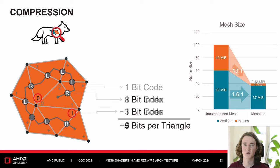Looking at the index buffer, we notice many indices follow an ascending pattern, which we can exploit for even better compression. We replace those indices with a marker indicating whether they follow the ascending pattern and only explicitly store the ones that don't. This is similar to what Epic Games uses in Nanite compression, but here all the decompression is happening inside a mesh shader and not in a compute prepass. Our updated index buffer now contains a 1-bit ascending pattern code, the 1-bit triangle strip code, and occasional 8-bit indices — averaging roughly 3 bits per triangle, for a total of 5 bits per triangle, or a 16-to-1 compression ratio.